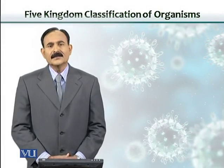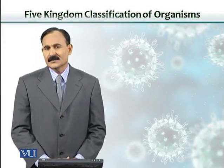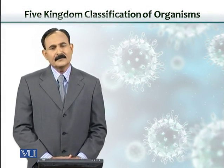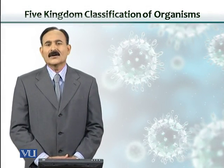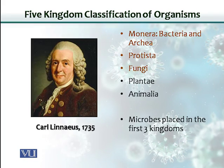Carl Linnaeus, in 1735, came up with a plan and he placed all organisms, including microbes, into five kingdoms. Those kingdoms include Monera, which had bacteria and archaea in them, Protista, Fungi, Plantae, and Animalia.